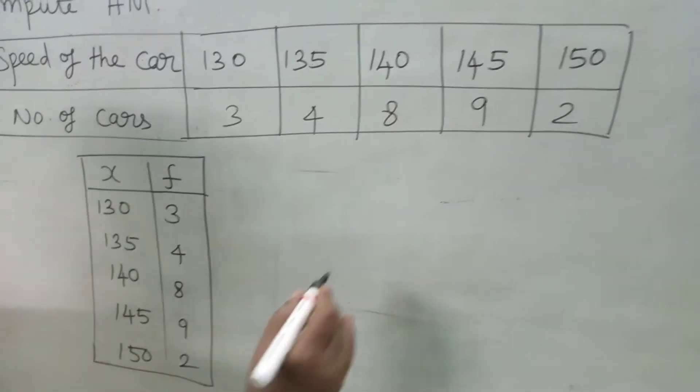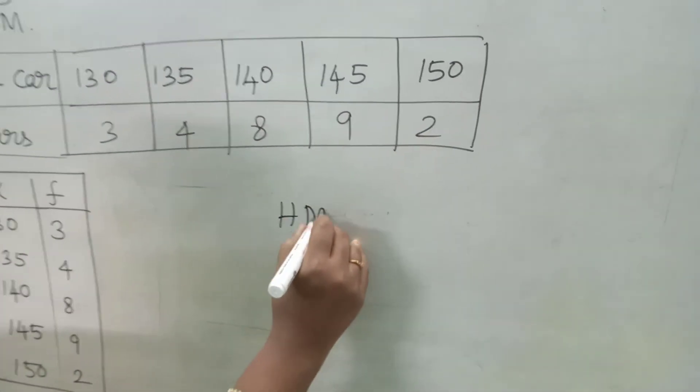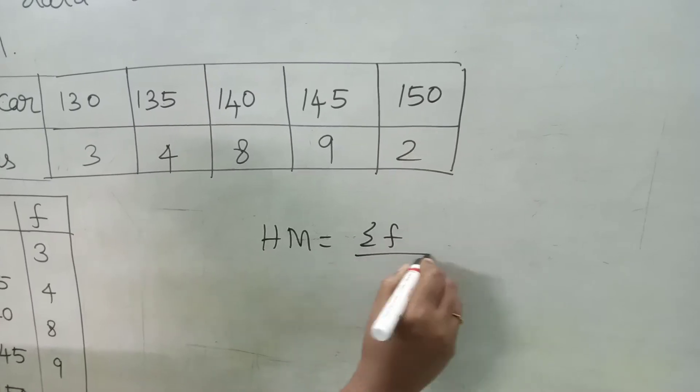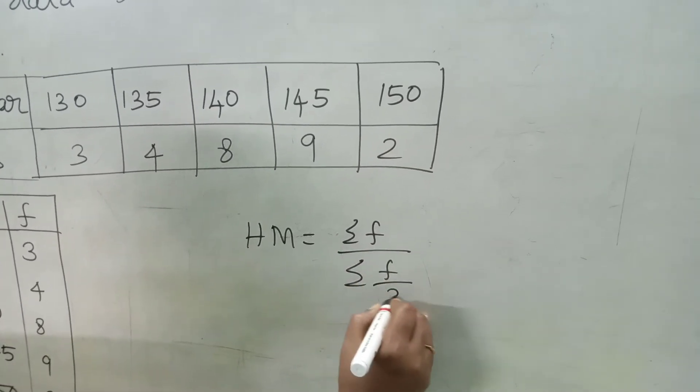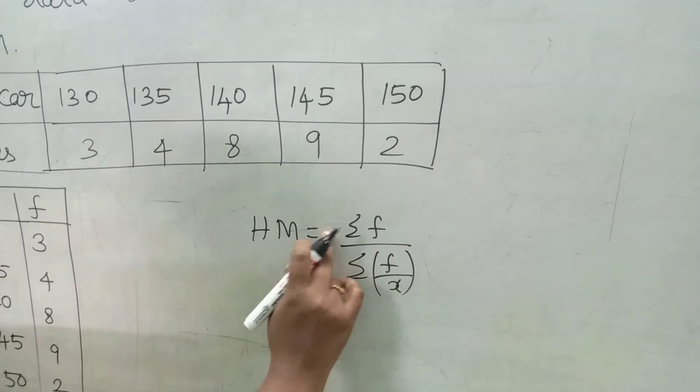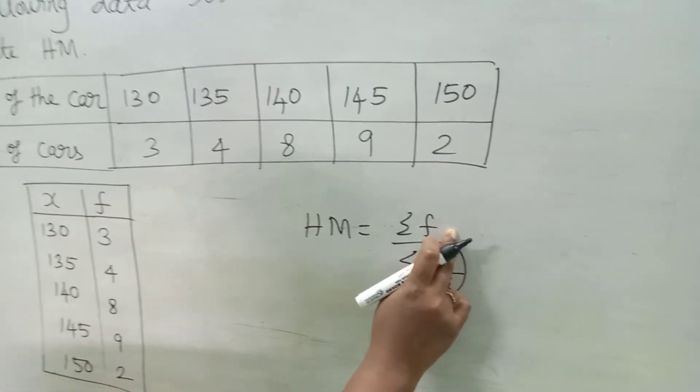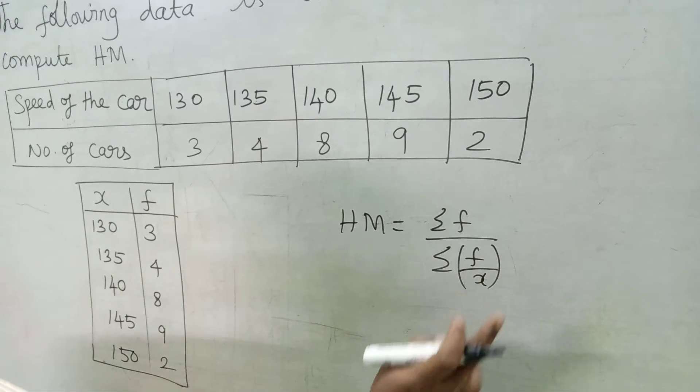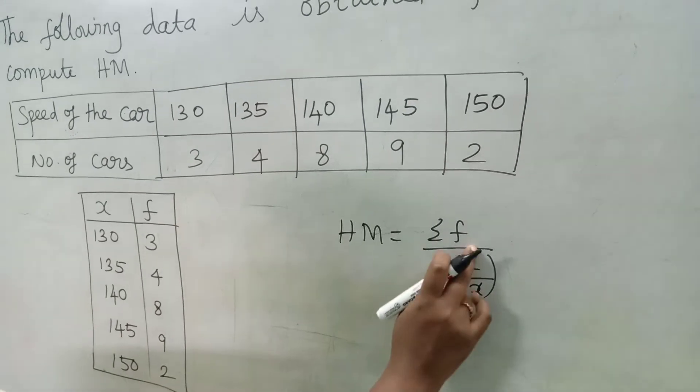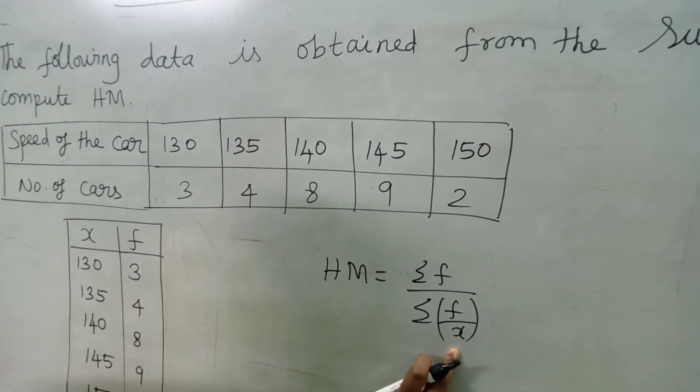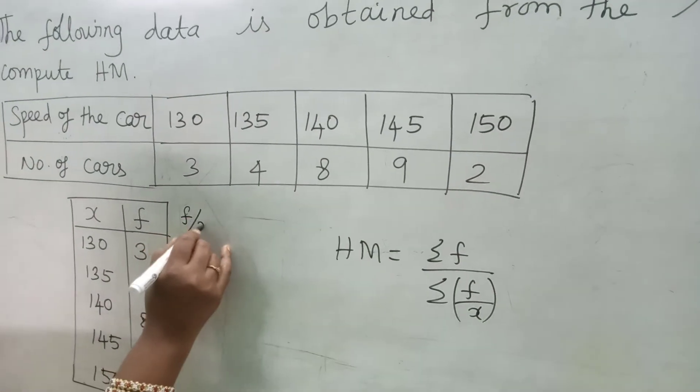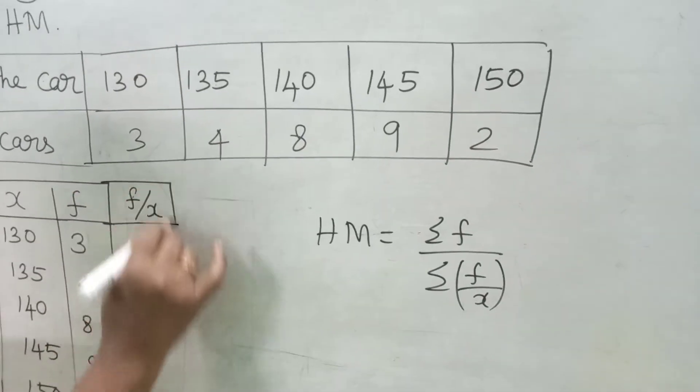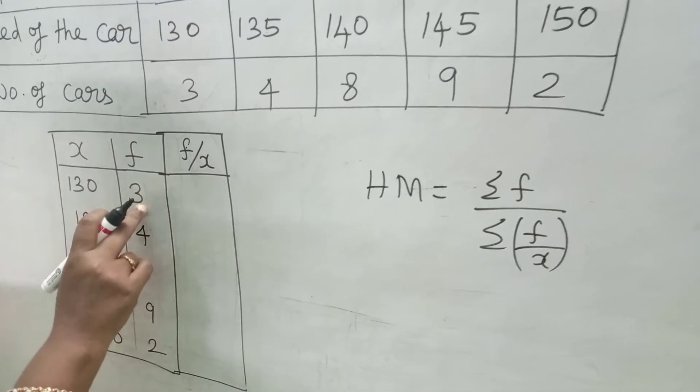We know the formula. Harmonic mean for discrete data is equal to sigma F divided by sigma F by X. We know sigma F is nothing but the addition of frequency column. To find the sigma F by X, first we find F by X. F divided by X. Frequency divided by X value.